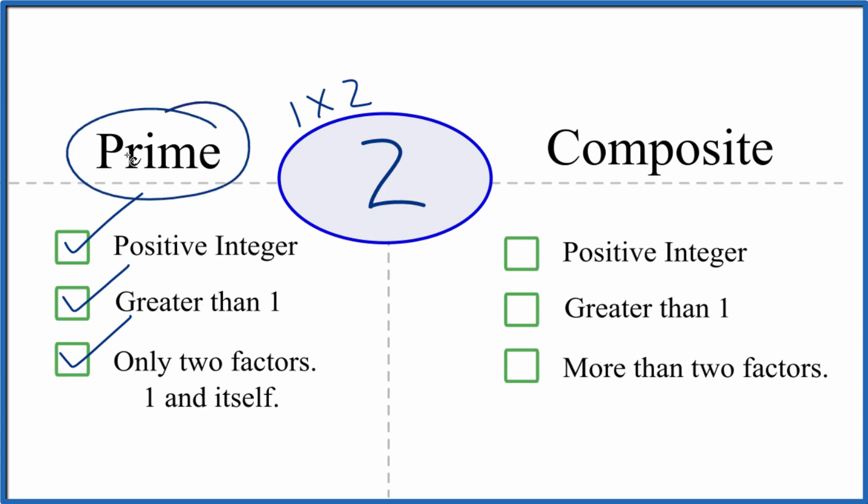So it is a prime number. Even though it's positive greater than 1, we don't have more than 2. So 2 isn't composite, even though it's an even number. But all the other even numbers, they are composite.